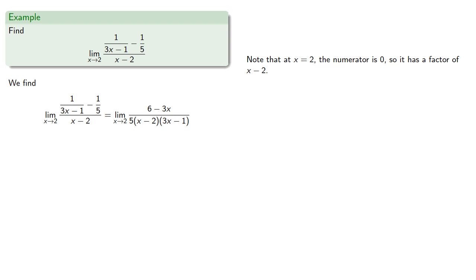Now at our limit value x equals 2, the numerator is 0, so we know it has a factor of x minus 2. In other words, it has to be x minus 2 times something, and that something works out to be negative 3. Now numerator and denominator have a common factor of x minus 2, so we can remove the common factor, and the algebraic expression is defined at x equals 2, so the limit is the function value.